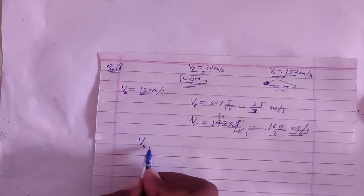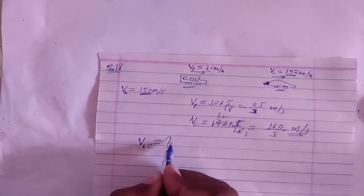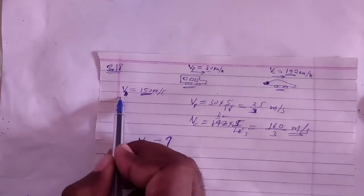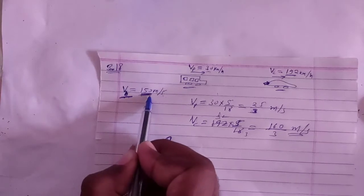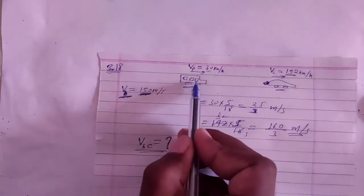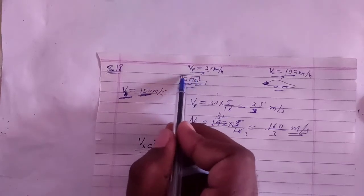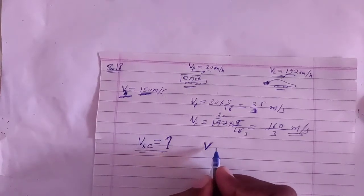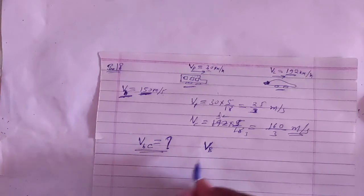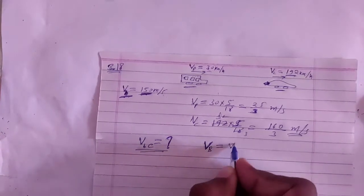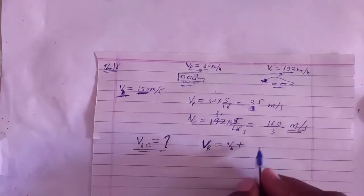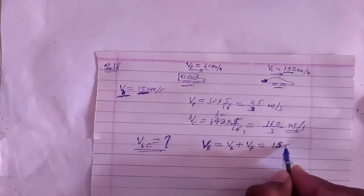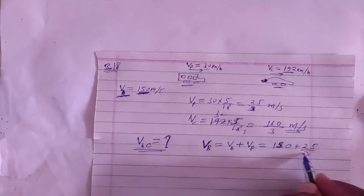We have to find the velocity of the bullet with respect to the thief's car. The bullet speed with respect to ground — the muzzle speed is 150 m/s relative to the police gun. So the speed of the bullet is 150 plus 25 by 3, which gives the absolute speed of the bullet.